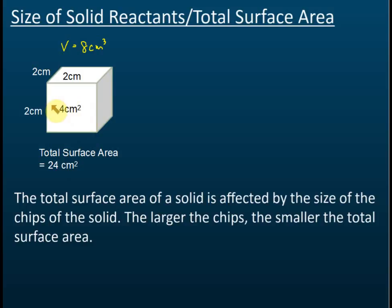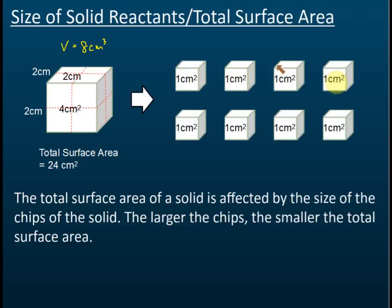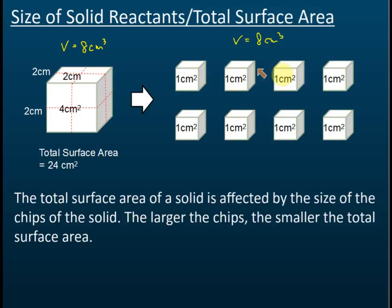Now if we break this cube — cut it in the middle — it will become eight pieces. The total volume remains the same at 8 cm³, and each small piece is 1 cm³.